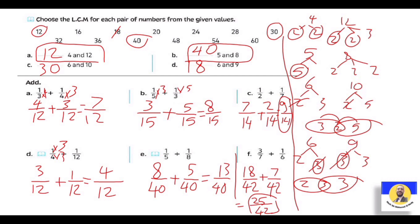يبقى كده يا أصحابي: أول حاجة ندور على الـ LCM لكل الـ numbers، نخليهم same denominator. وزي ما عملنا × down، نعمل × up، عشان نعرف نطلع الـ answer.